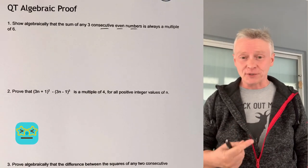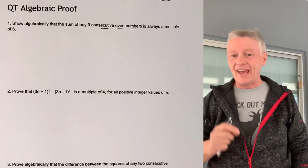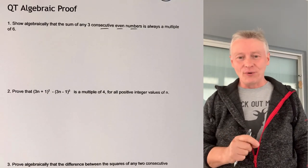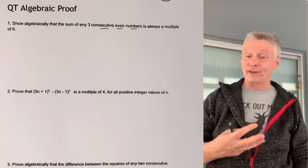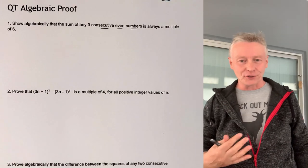Okay, so the things to remember with Algebra Proof is that any number is n, any even number is 2n, and any odd number is 2n plus 1. And those are the three kind of basic principles you need to remember for Algebra.